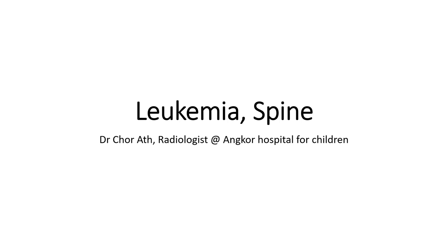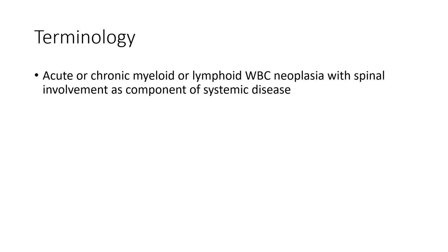Hello everyone. Today I am going to show you about leukemia in spine manifestation. Leukemia can be described as chronic myeloid or lymphoid white blood cell neoplasia with spinal involvement and a spinal component of systemic disease.